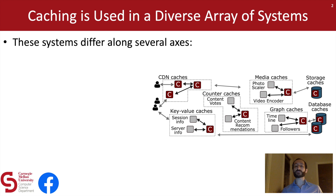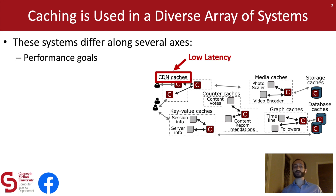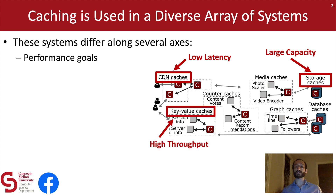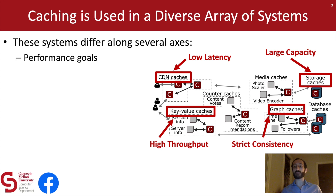But even this drawing here depicts only a small sample of the hundreds of caching use cases that we find at Facebook. And given the diversity of these use cases, it's no surprise that these systems differ along several axes. For example, these systems have different performance goals. CDN caches prioritize low latency. Storage caches require large capacity to store the large images and videos.